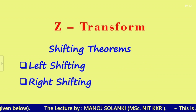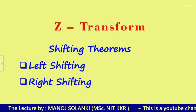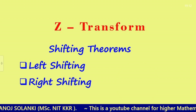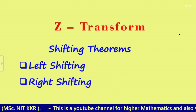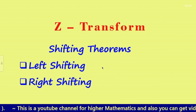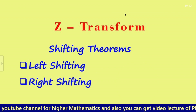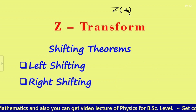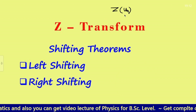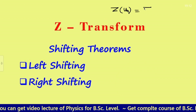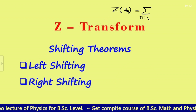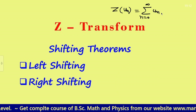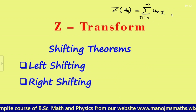In this particular video we are going to discuss Z transform shifting theorems. There are two types of shifting: left shifting and right shifting. Shifting means if we want to calculate the Z transform and we know that the Z transform of u(n), a discrete function, is nothing but the summation from n equals zero to infinity of u(n) times z to the power minus n.